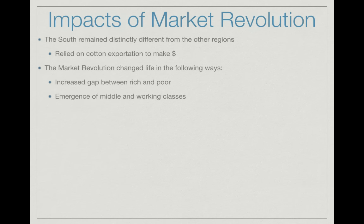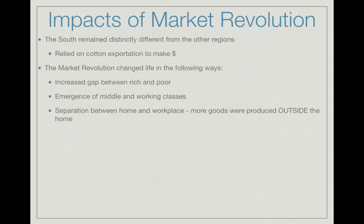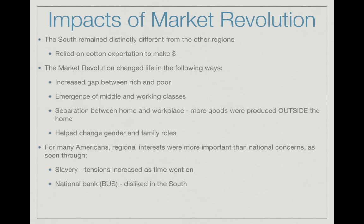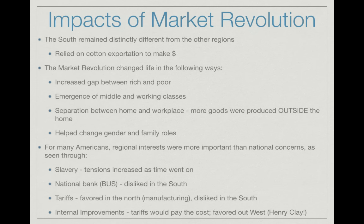The South remained distinctly different from other regions, relying heavily on cotton and devoting more and more resources to it. The Market Revolution changed life drastically by increasing the gap between rich and poor and creating new middle and working classes. The separation between home and workplace grew as more goods were produced outside the home. This changed gender and family roles. Regional interests remained more important than national concerns, seen in tensions over the national bank and tariffs — Henry Clay's American System was unpopular in the South because tariffs favored Northern manufacturing.